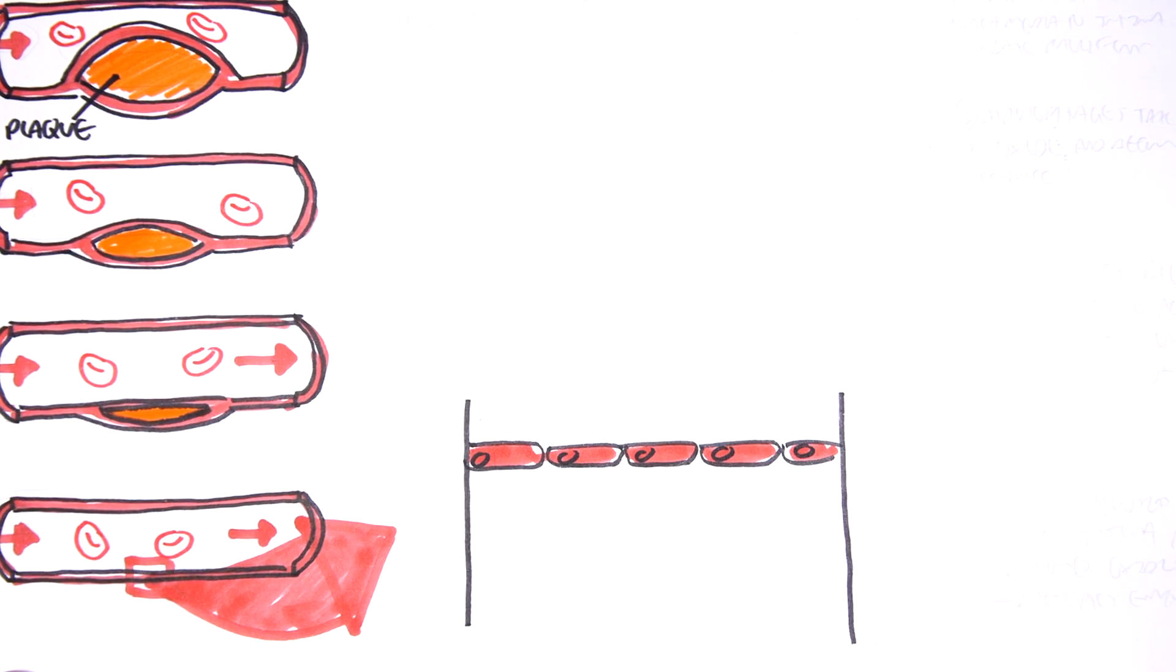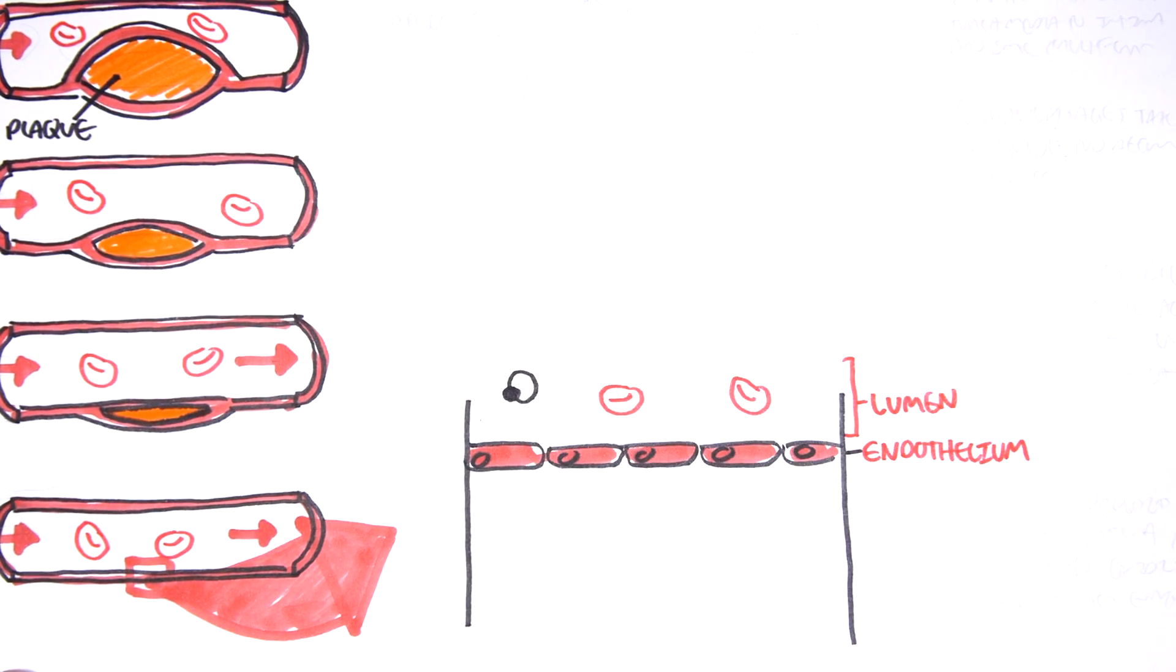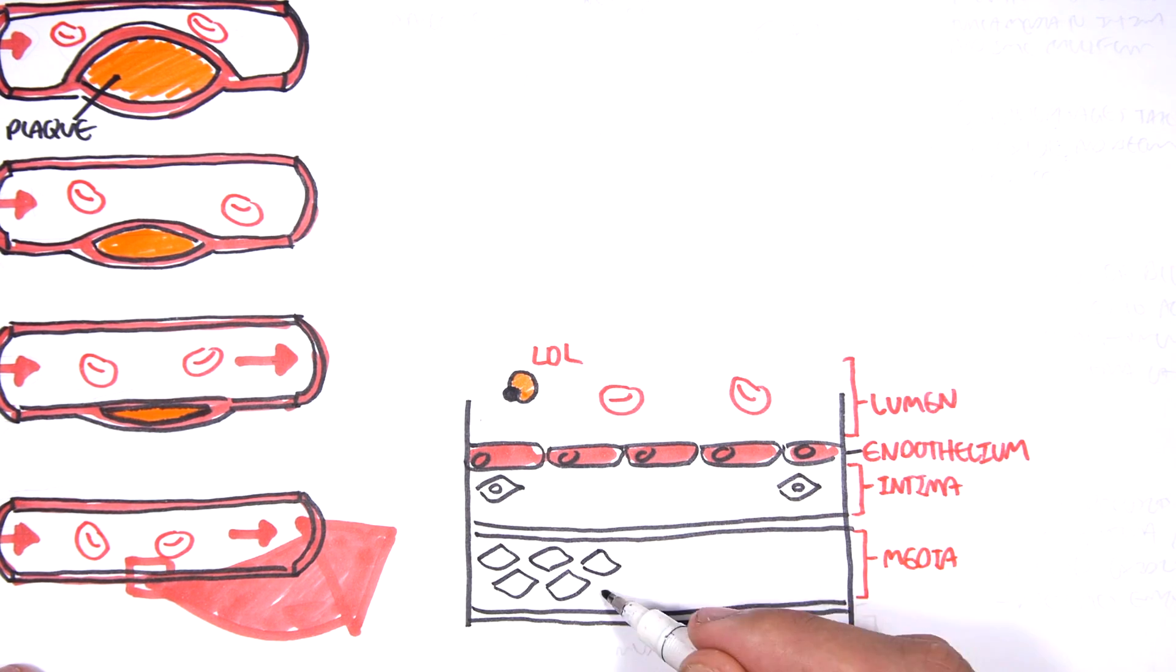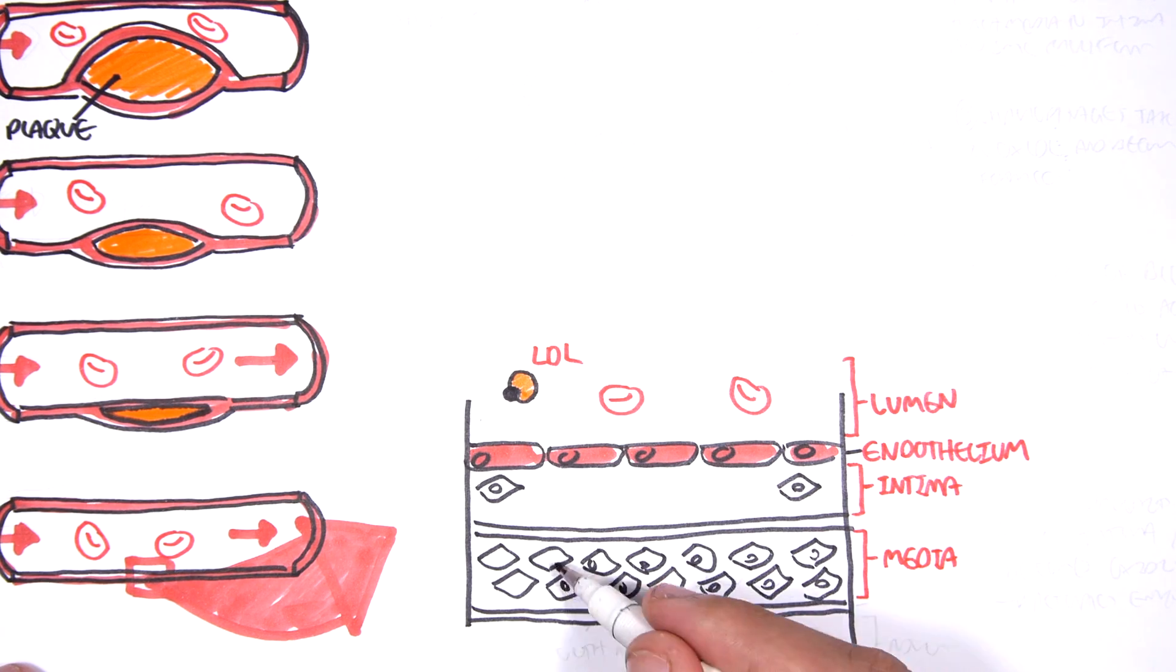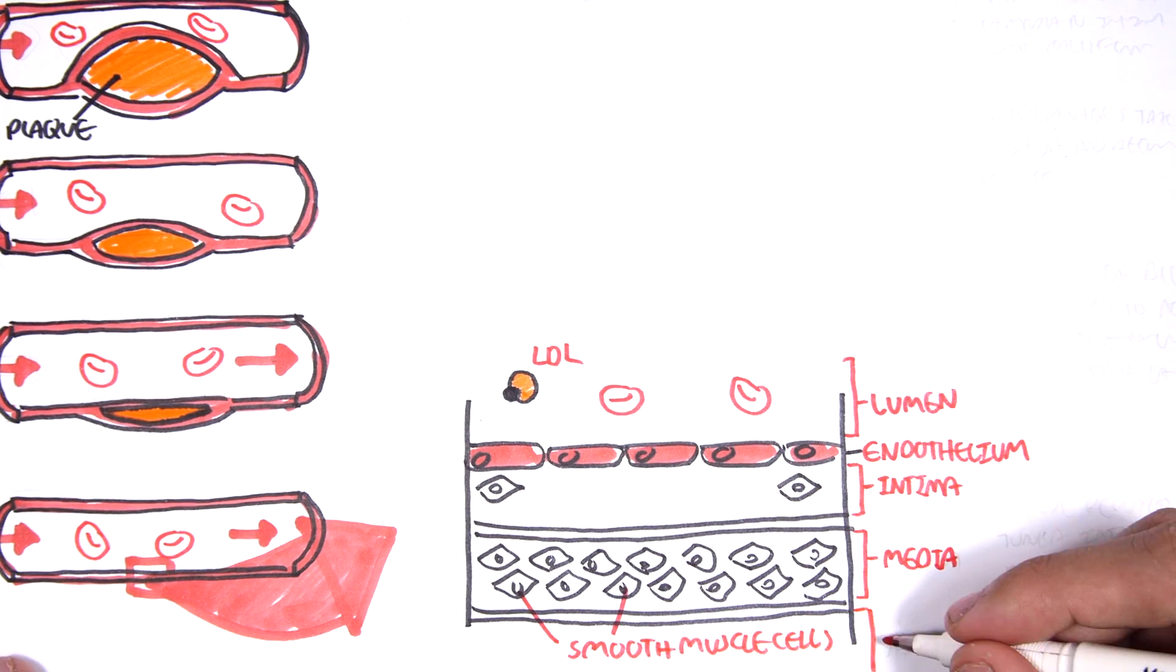So let us zoom first into this blood vessel and look at its different layers and what they contain. Here is our endothelial cells and here is the lumen where we have red blood cells and also lipoproteins such as LDLs, which are low-density lipoproteins. Surrounding the endothelium, we have the tunica intima and then the tunica media. In the tunica media, we have smooth muscle cells that are important in contraction of vessels. Surrounding the media, we have the adventitia, which is essentially connective tissue.